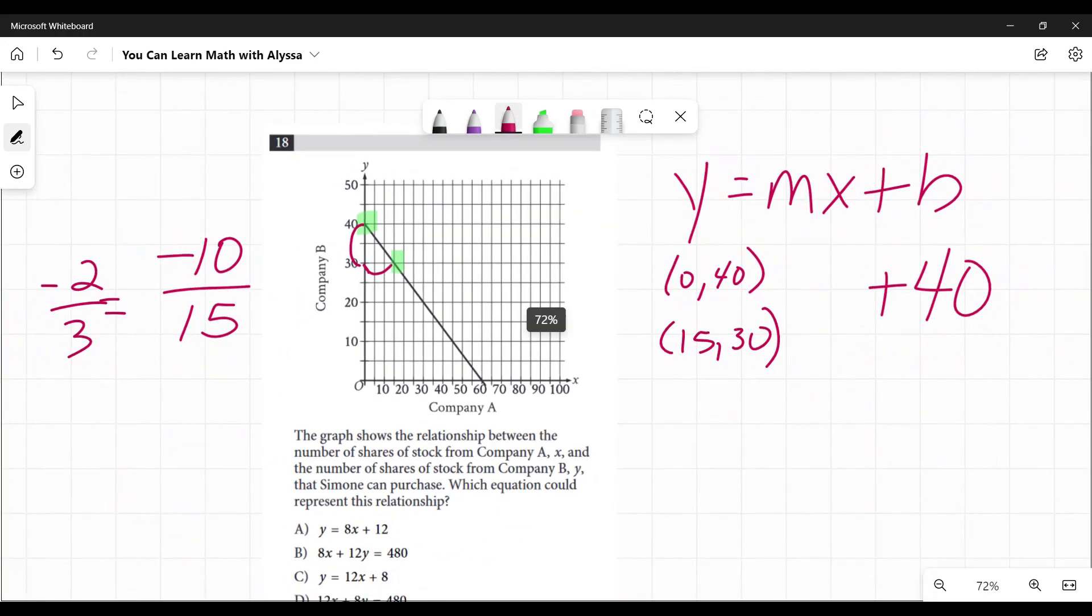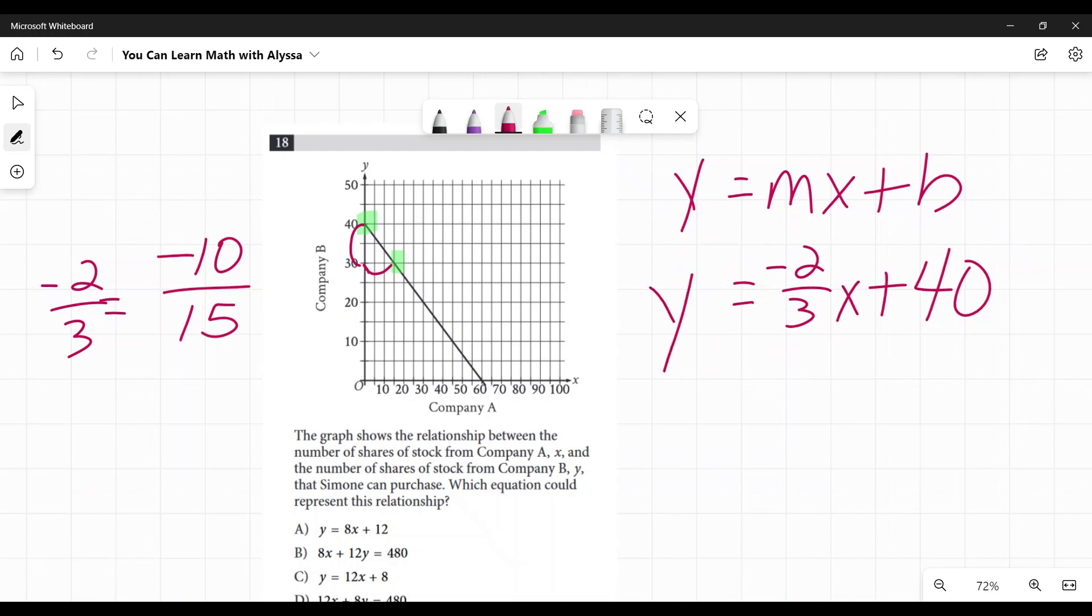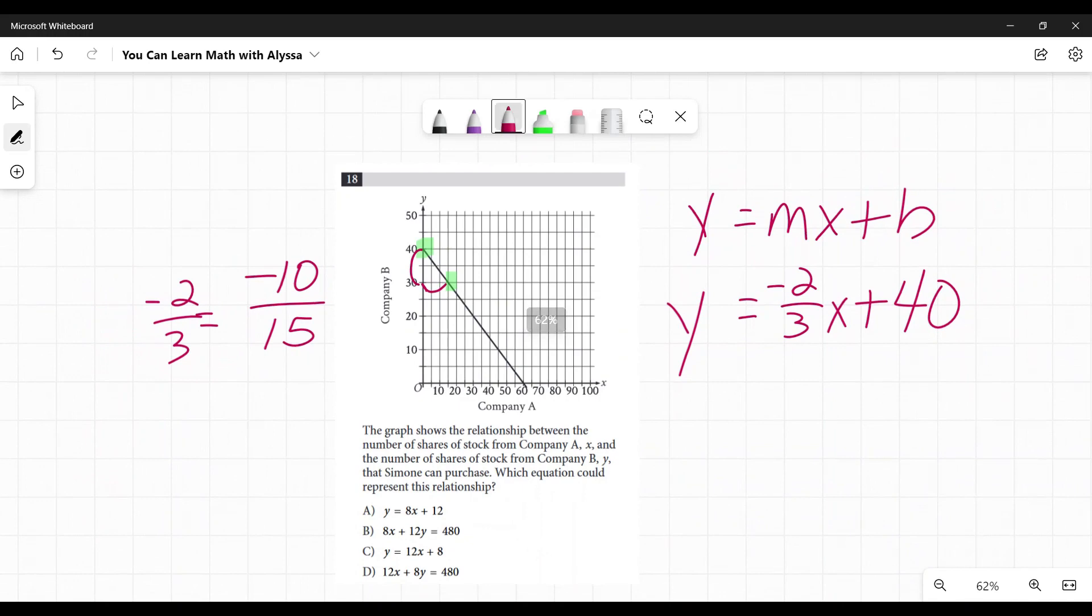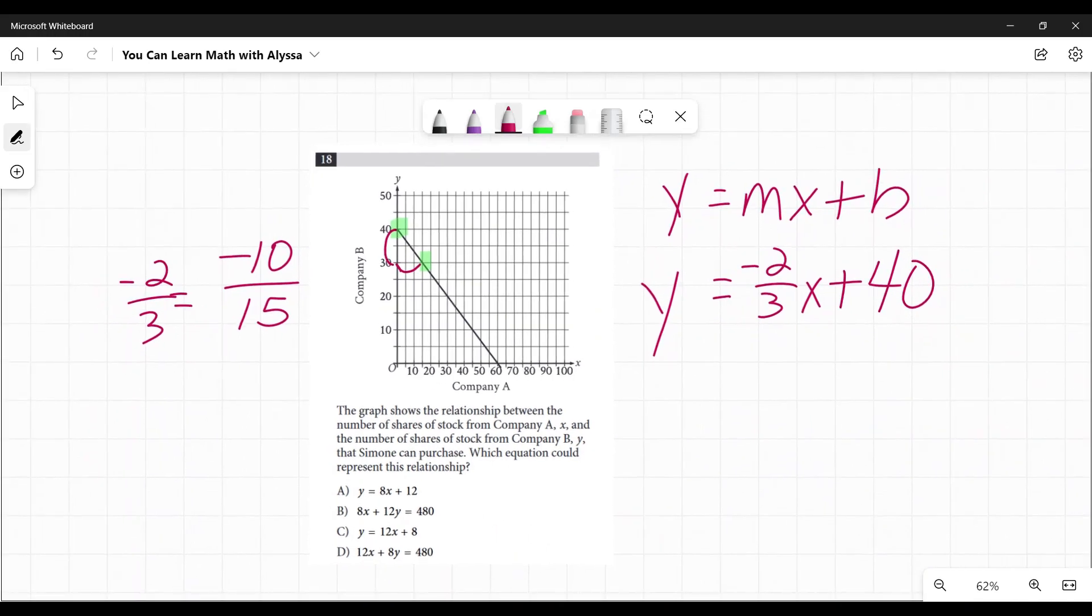So I know now that my slope is negative 2/3. Y equals negative 2/3x plus 40. And oh no, it is not a choice. What have I done wrong? You haven't done anything wrong. They're being tricky.